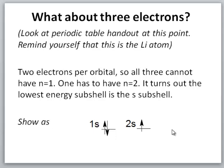What if we have three electrons? At this point it's helpful to look at your periodic table handout and remind yourself that this is the lithium atom. There are two electrons per orbital, so all three can't have n equals 1. One has to have the next lowest possible energy, which is n equals 2. The lowest energy subshell for n equals 2 is the s subshell. This is the conventional orbital diagram for lithium. By convention, if you have an electron which is by itself in an orbital, you draw it as if it is plus one-half, pointing up — although in truth it doesn't make a difference whether it's up or down as far as energy is concerned.